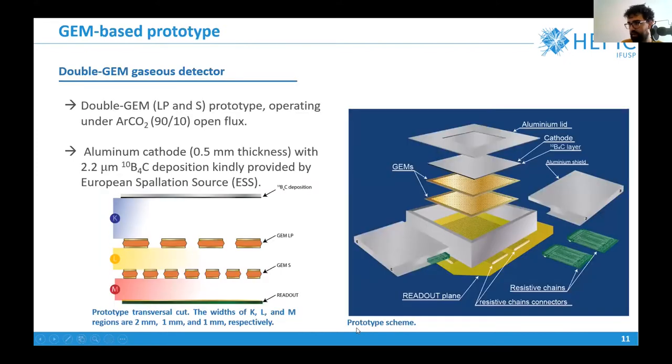In yellow we have the tracks of the ions produced by this multiplication. In our detector we use two microstructures, two GEMs with different pitch sizes. The large pitch one has 280 micrometers between every two holes and the standard one has 140 micrometers between every two holes. We use a deposition at the cathode of our detector, a boron-10 carbide deposition 2.2 micrometer thickness.